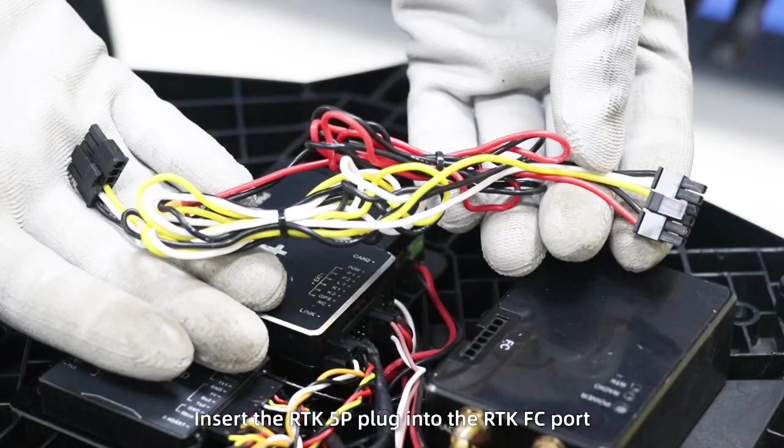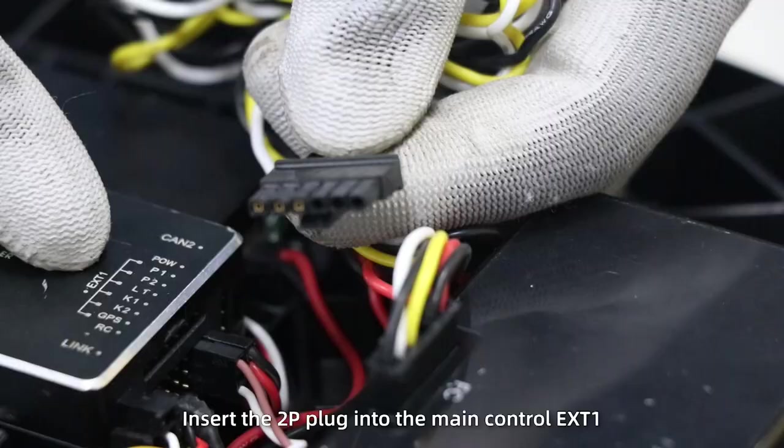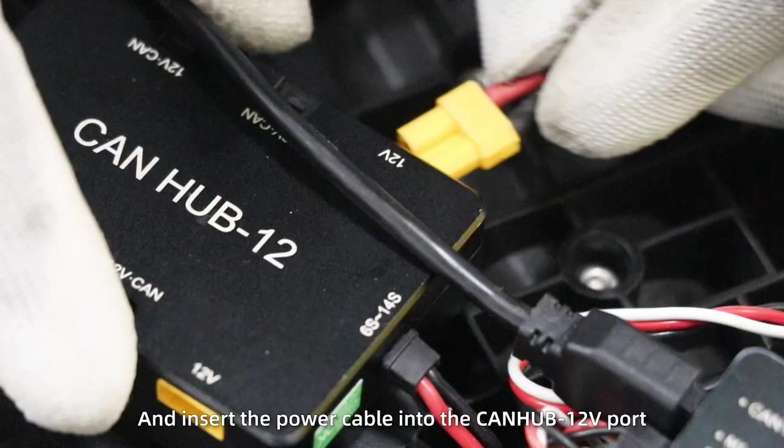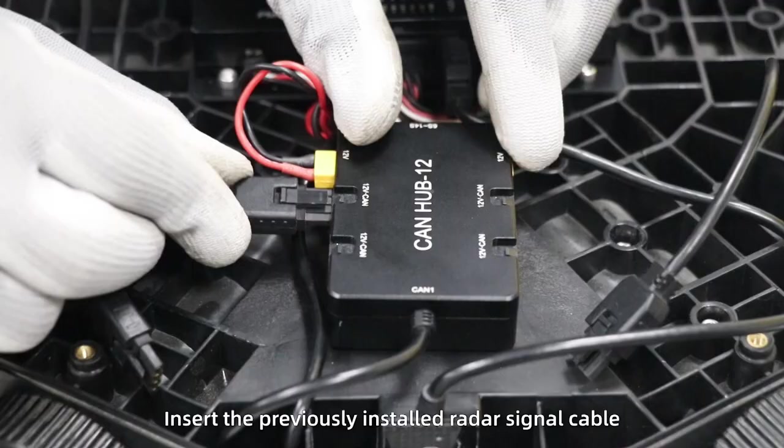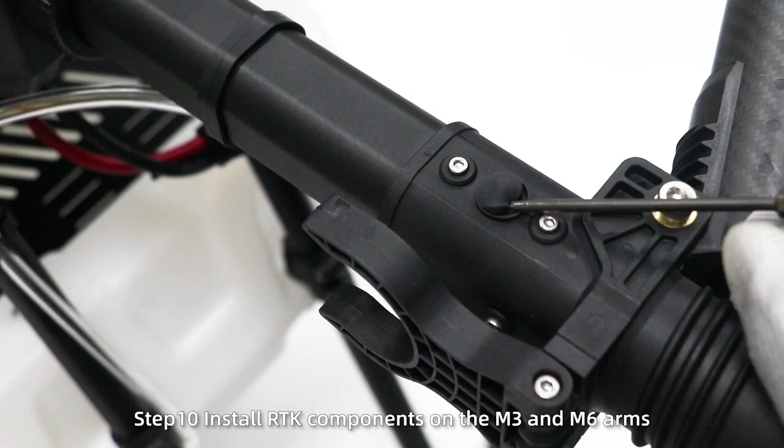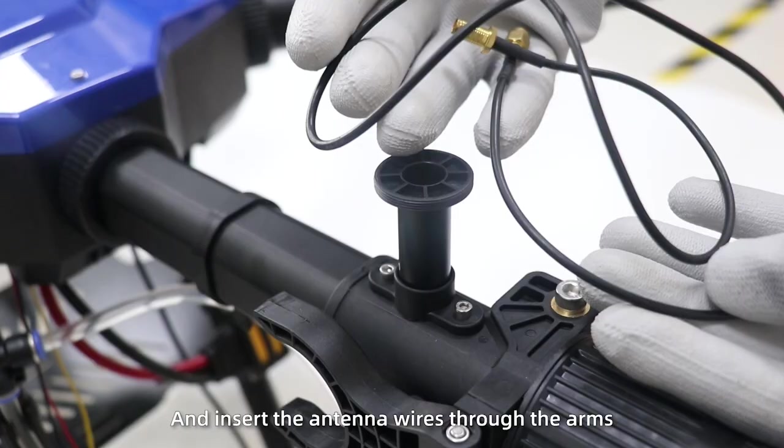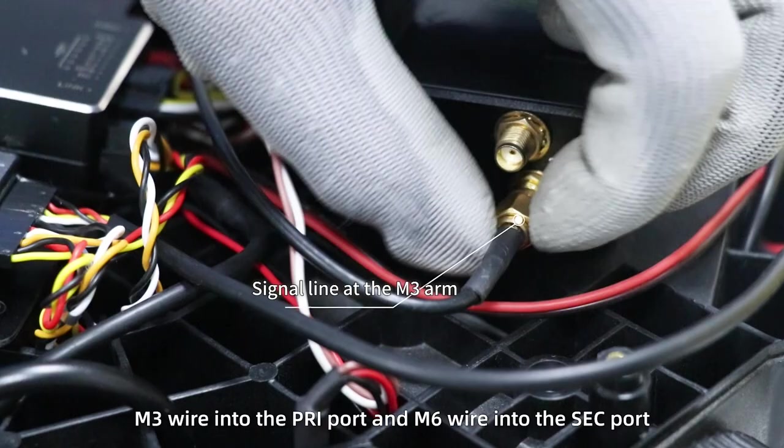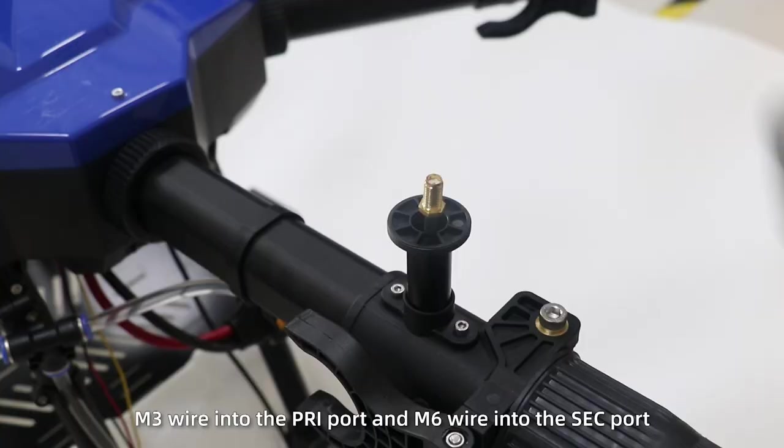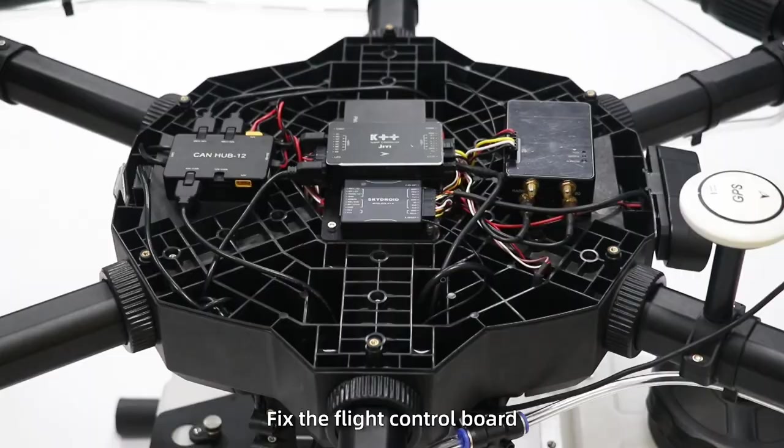Step 9: Fix the RTK. Insert the RTK 5P plug into the RTK FC port. Insert the 2P plug into the main control X81 and insert the power cable into the CAN hub T12 receiver port. Insert the previously installed radar signal cable into the CAN bus module through the frame body. Step 10: Install RTK components on the M3 and M6 arms and insert the antenna wire through the arms into the RTK receiver. M3 wire into the PRI port and M6 wire into the SEC port. Then install the antenna protection cover. The last step: Fix the flight control board and the cover to complete all installation.